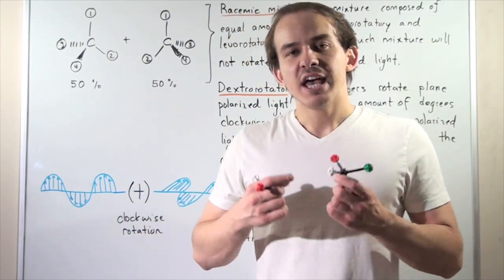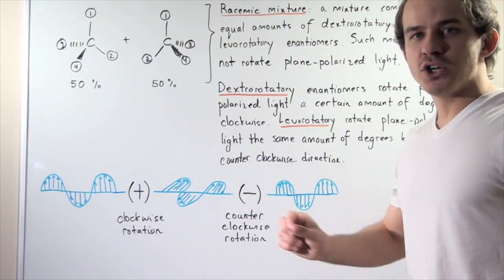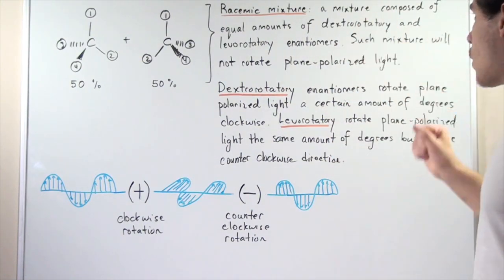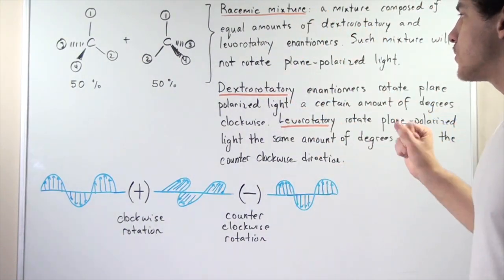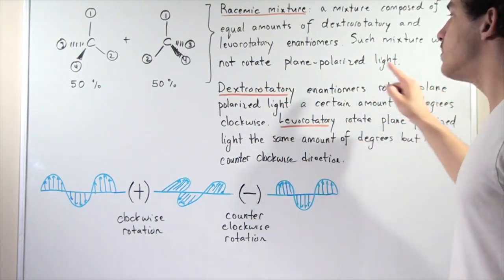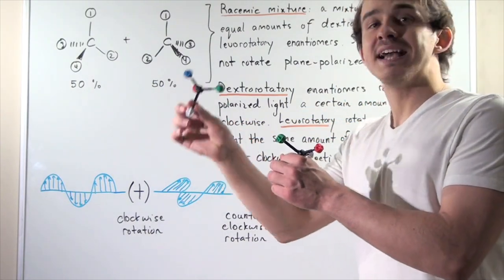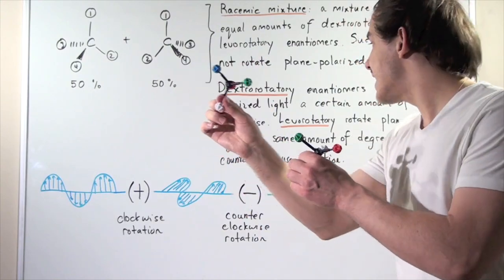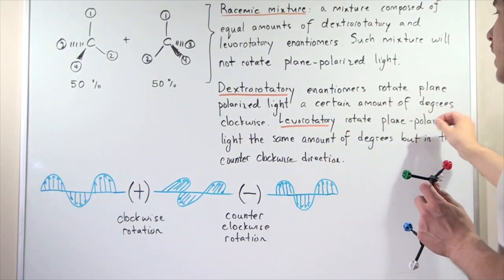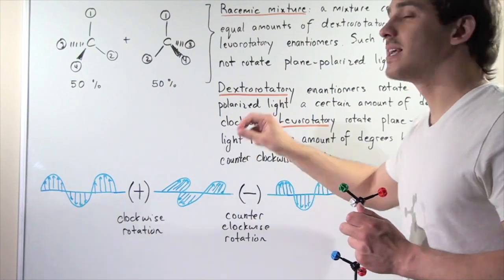So what happens if I create a racemic mixture? A racemic mixture is a mixture composed of equal amounts of dextrorotatory and levorotatory enantiomers. Dextrorotatory enantiomers rotate plane polarized light a certain amount of degrees clockwise, and levorotatory enantiomers rotate plane polarized light the same amount of degrees but in the counterclockwise direction.